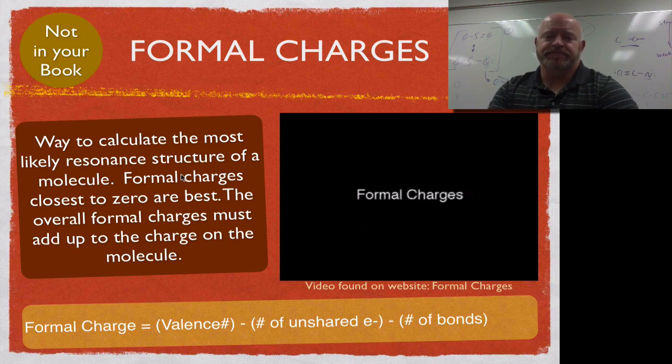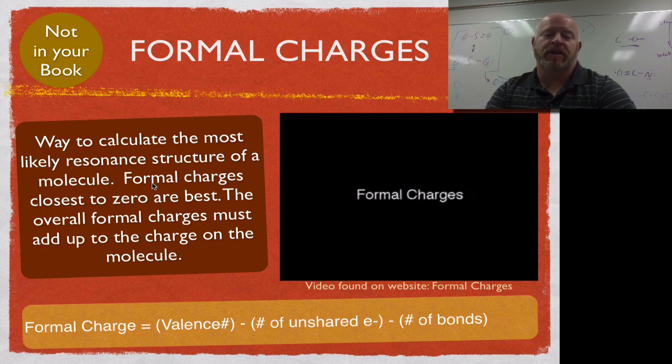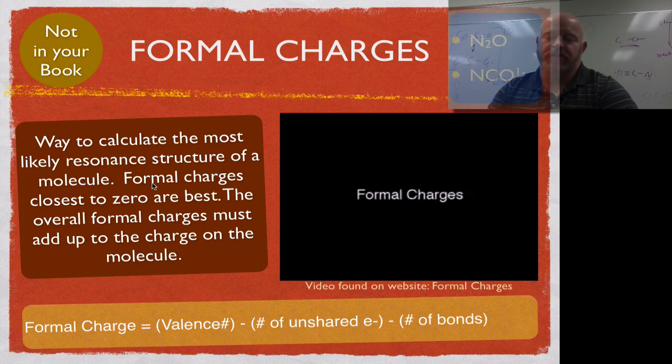Basically, if we have multiple resonance structures, there's kind of a mathematical way to figure out which is the preferred bonding state for the different elements. And it goes back to this idea of how many valence electrons they have to start and how many valence electrons they would like to share to keep them most stable. So we're going to start this off with a little video.